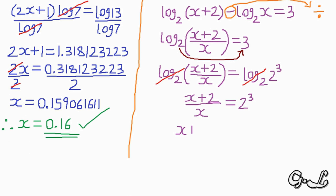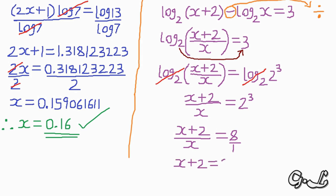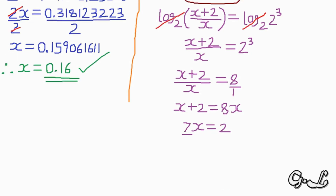So x plus 2 over x equals 2 to the power 3, which equals 8. Writing 8 as 8 over 1 and cross-multiplying, we get x plus 2 equals 8x. Making x the subject, we have 7x equals 2.